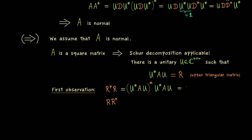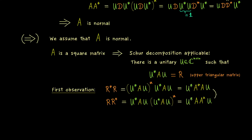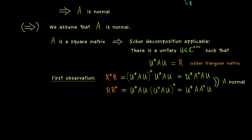We use the star operation in the matrix product and find the identity matrix in the middle, which vanishes, leaving A* A for R* R. Similarly, R R* gives A A*. Since A is normal, A* A = A A*, so R is also a normal matrix. Our whole discussion is now reduced to normal upper triangular matrices.